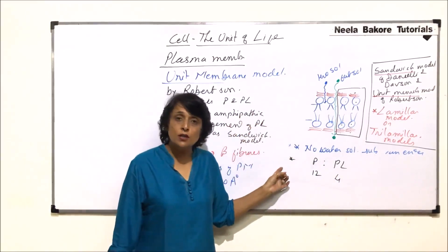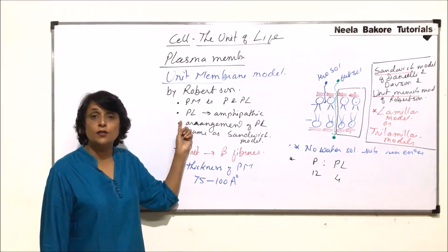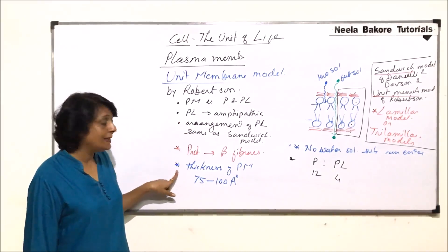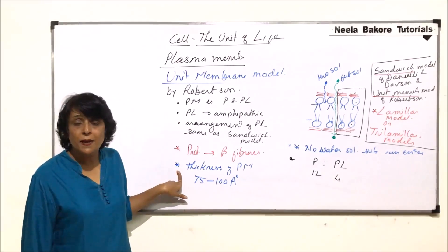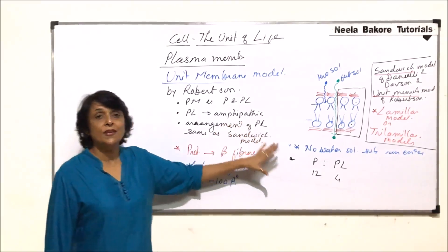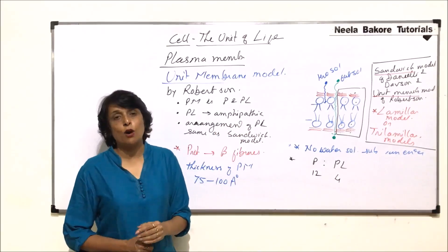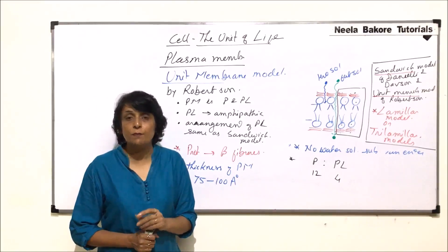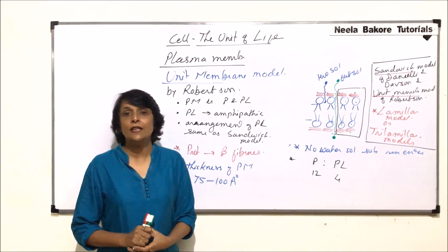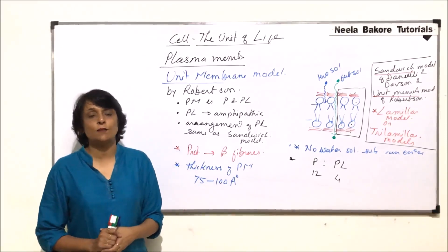In Robertson's model, there was one change from Danielli-Davson: the protein type. And there was extra information about the thickness of the plasma membrane. These two models together are known as lamellar models or tri-lamellar models, and both have been rejected because they could not explain the properties of the plasma membrane. In the next part, we will take another model — the fluid mosaic model.